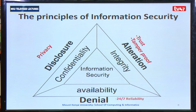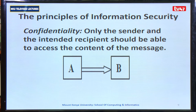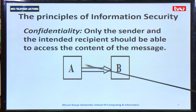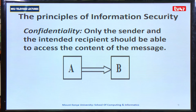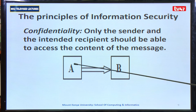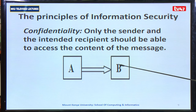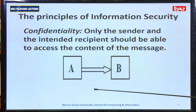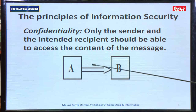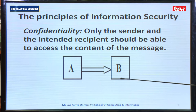Allow me to explain further on the concept of the CIA triad. Confidentiality simply means only the sender and the intended recipient should be able to access the content of the message. If you are sender A and you have receiver B, it means there is no man in the middle to intercept this information. When a system achieves such a state, we say it has achieved confidentiality.